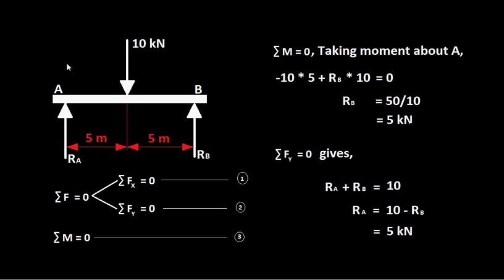When taking moment about A, there are three forces: reaction at A, reaction at B, and the 10 kilo Newton force. Considering the reaction at A first — extend its line of action and draw a parallel line through the moment center A. The two lines coincide, so there is no perpendicular distance, and therefore the moment of RA about A is zero.